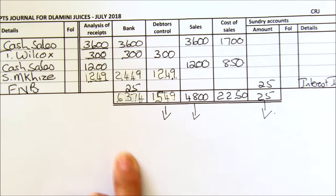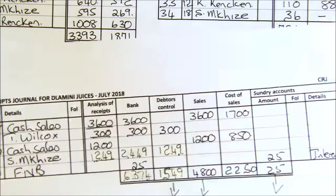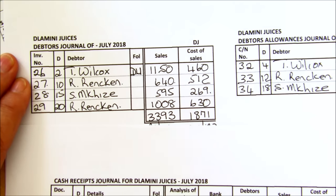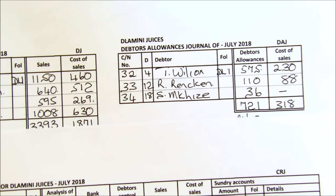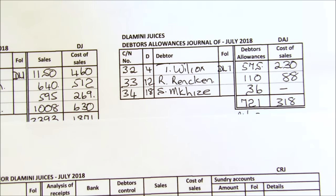I'm going to stop this series of lessons at this point. You need to go through other exercises on these journals until you know how to draw them up, and you're quite happy with when things go into the debtors journal and the debtors allowances journal. Once you're familiar with it, you can move into the next lesson in which I'm going to take the same exercise and post it to the ledger. So keep practising your journals.